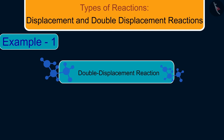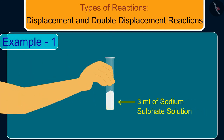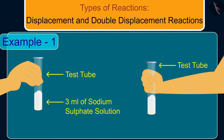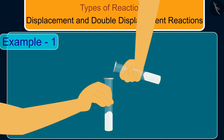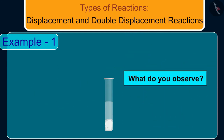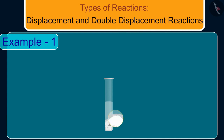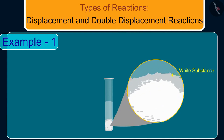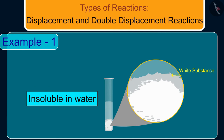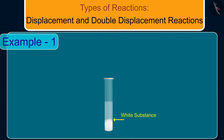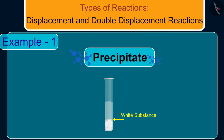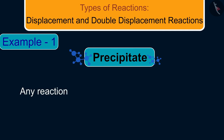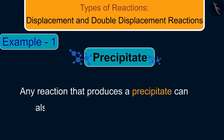Let us understand double displacement reactions with the help of an example. Take about 3 ml of sodium sulfate solution in a test tube. In another test tube, take about 3 ml of barium chloride solution. Mix the two solutions. You will observe that a white substance which is insoluble in water is formed.